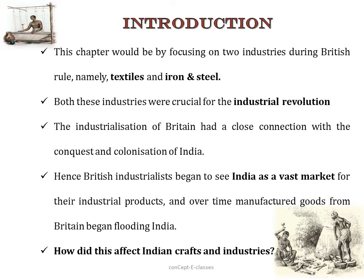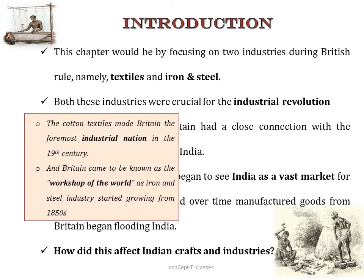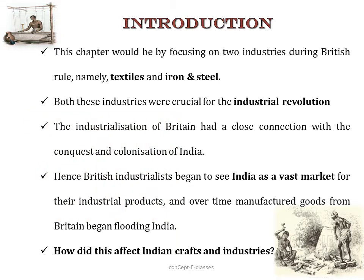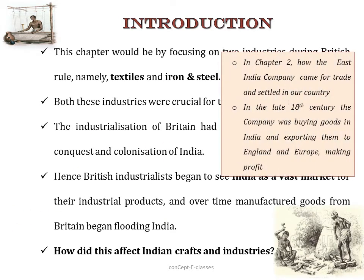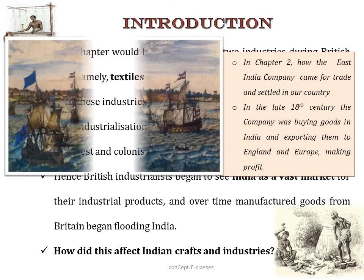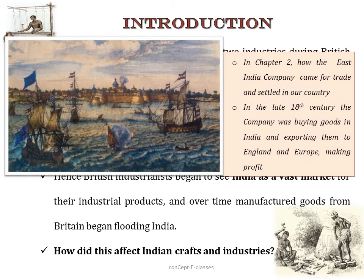Both the textile and iron and steel industries were crucial for the industrial revolution. The mechanized production of cotton textiles made Britain the first industrial nation in the 19th century, and Britain came to be known as a workshop of the world as iron and steel industries started growing in 1850. This industrialization of Britain had a close connection with the conquest and colonization of India. The East India Company came to India for trade, settled in the country, and later exported goods to England and Europe, making huge profits.